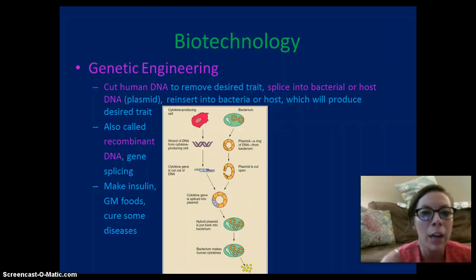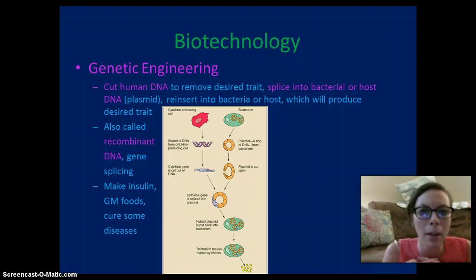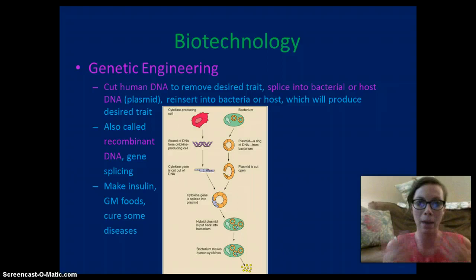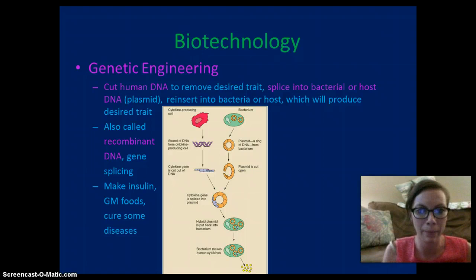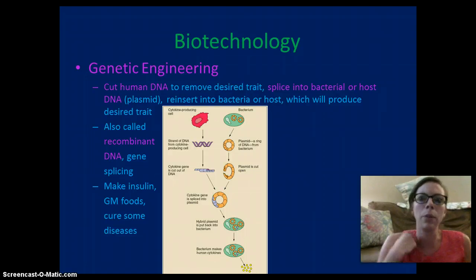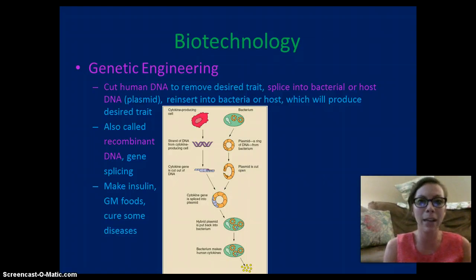Genetic engineering involves taking DNA from one organism and inserting it into another. A piece of human DNA containing the desired trait is cut out, inserted into bacterial DNA, and the bacteria is reinserted — it then produces that desired trait. This is called recombinant DNA, and it's important in making drugs, producing genetically modified food, and curing diseases. Biotechnology allows us to develop important technologies that may help save many lives. That is the slideshow about DNA — good luck studying!